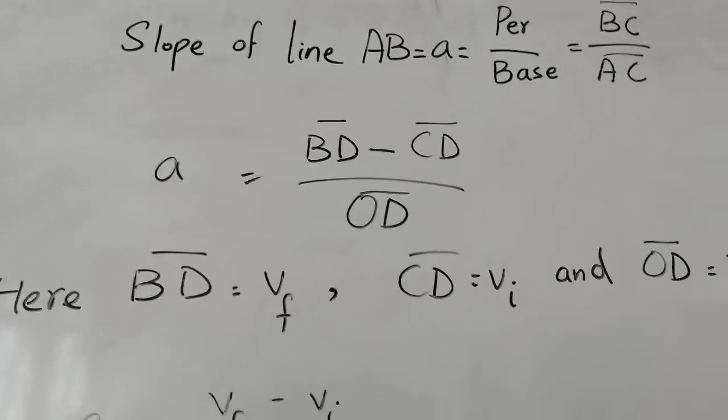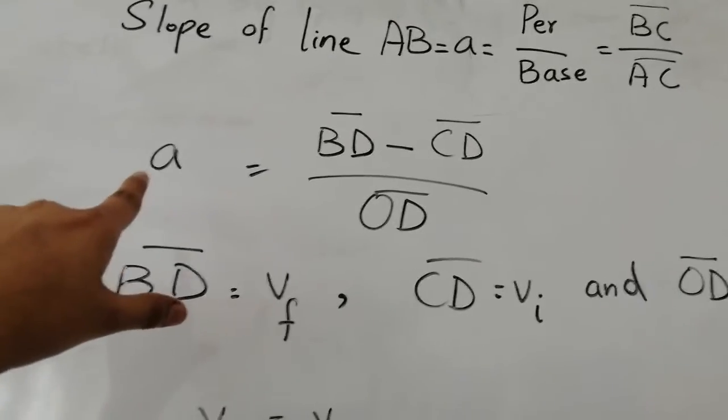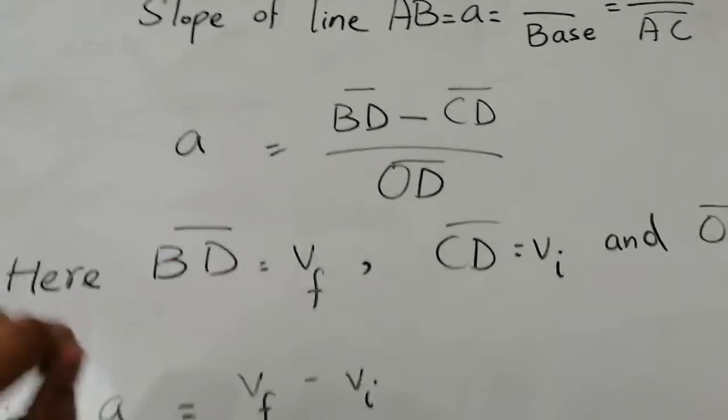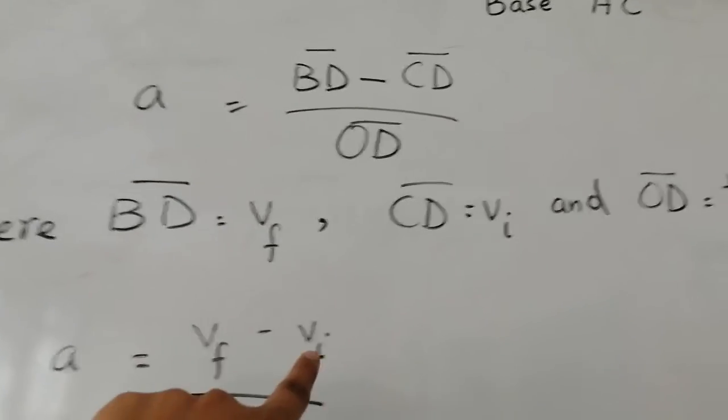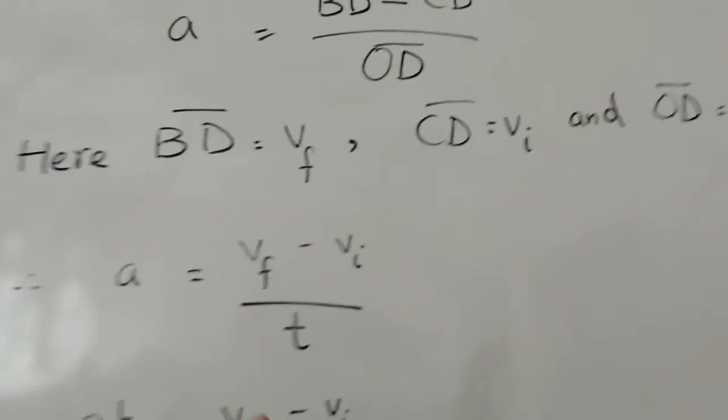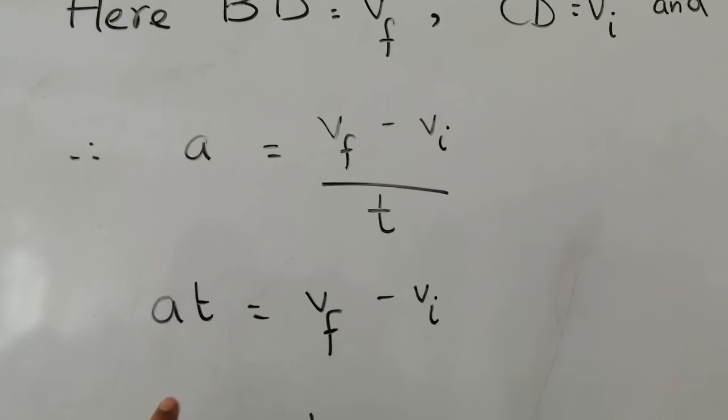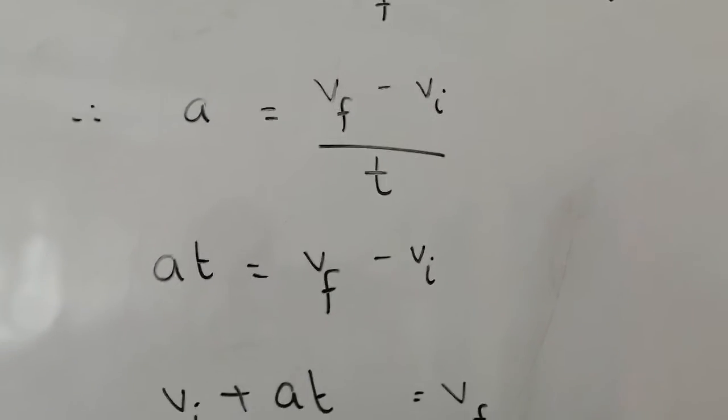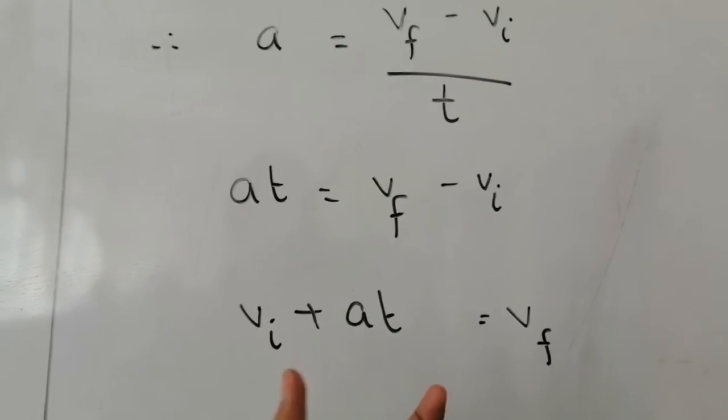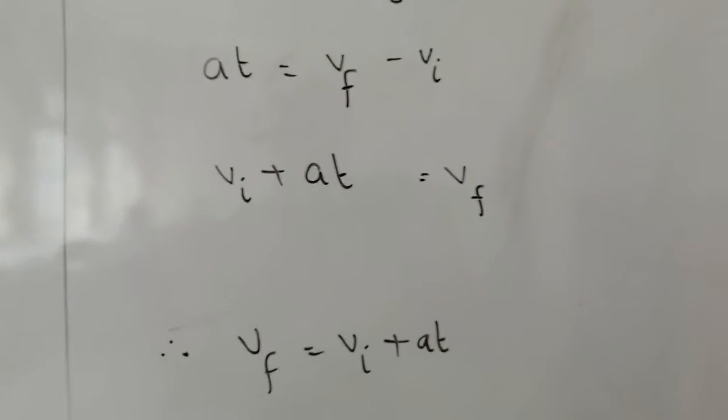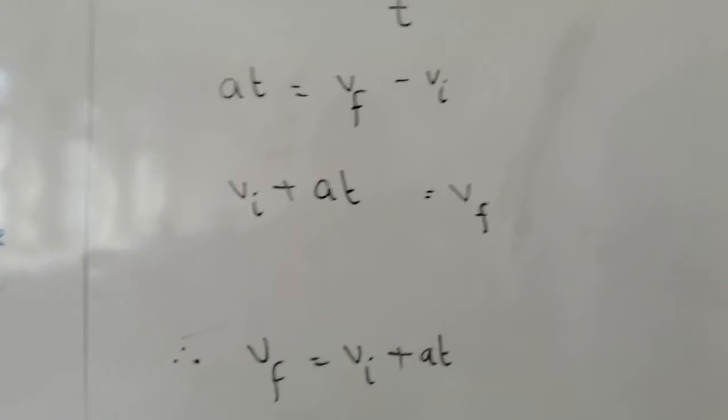Substituting all the values in that equation for the slope of the line: acceleration a equals (vf minus vi) divided by t. So a = (vf - vi)/t. Multiplying t to the other side: at = vf - vi. Adding vi to the other side: vf = vi + at. This is the first equation of motion: vf = vi + at.